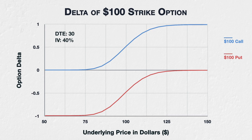the $100 strike call has a delta of about 0.523. However, when the underlying price is at $101, the delta is about 0.557. When the underlying price is at $110, the delta is 0.813, and when the underlying price is at $90, the delta is about 0.195. So delta can vary a lot based on movements in the underlying price. But as we can see from the chart, this change in delta is not linear.